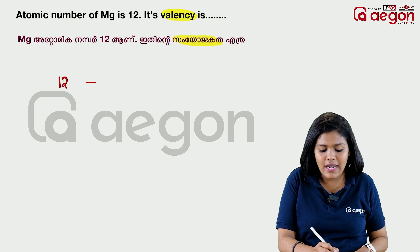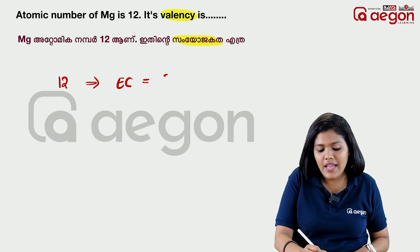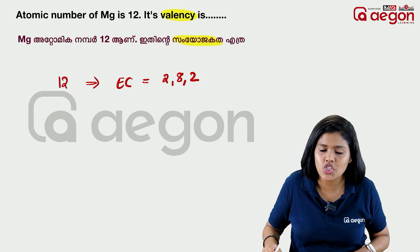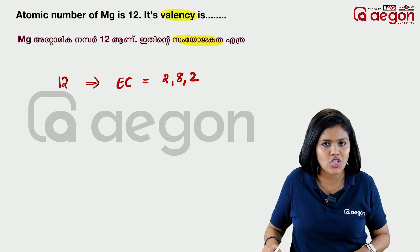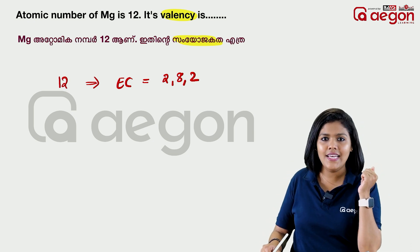Atomic number 12 — let's find the electronic configuration. The configuration is 2, 8, 2. So the outermost shell has 2 electrons, which means the valence of Magnesium is 2.